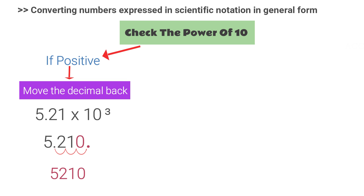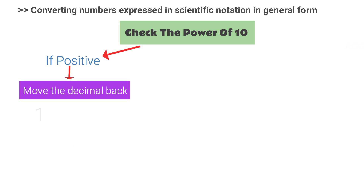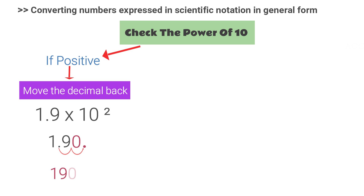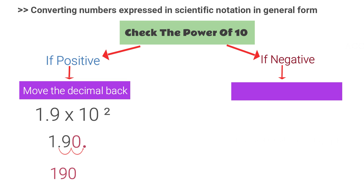When going back, if there is no digit we put a zero if needed. Look at this example: one point nine into ten to the power two. Two is the index and it is positive, so we go back twice — it becomes one hundred and ninety. Then, if the power is negative, we move the decimal point forward the number of positions as the index.